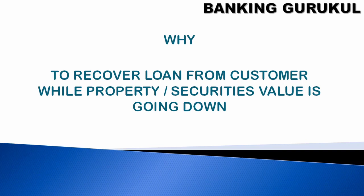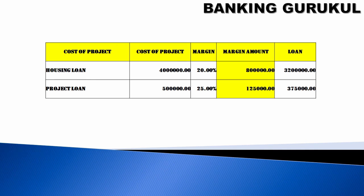Why is margin amount required? If the cost of your house or project is 50 lakhs and the bank gives 100% loan — 50 lakhs — and suddenly your house value comes down to 45 or 40 lakhs, the customer may not be ready to pay the monthly EMI and defaults. If the bank sells the house to recover the loan, they lose that 20%. For that reason, the bank always takes 20% margin from the customer and gives 80% as a loan, to minimize risk.